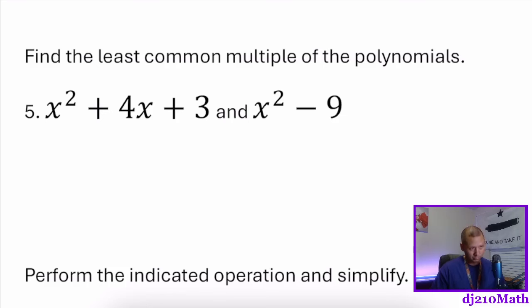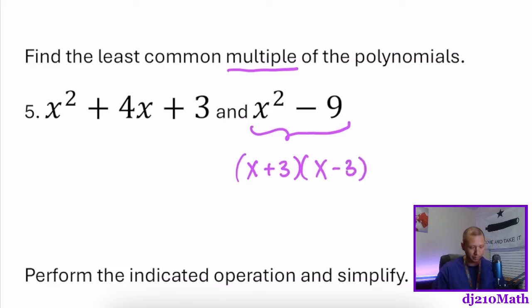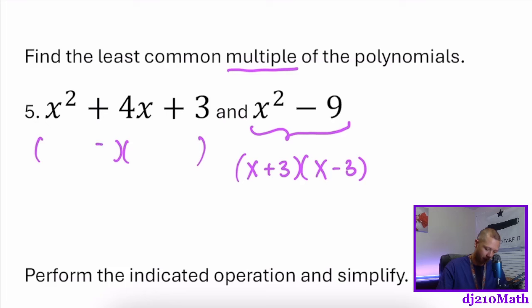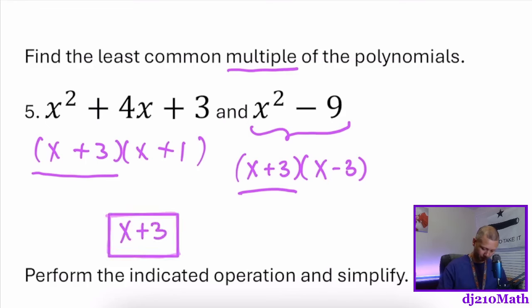Find the least common multiple — the smallest common multiple, the smallest thing that multiplies into both. x squared minus 9 is a difference of squares, so that's (x+3)(x−3). Looking at x squared plus 4x plus 3: two numbers that multiply to make 3 and add up to 4 are three and one, both positive. The least common multiple — the only common factor — is x plus 3, which is common to both.